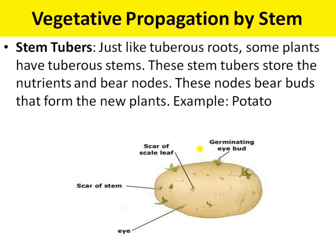A plant like potato is also called a potato tuber because it has an underground stem. Observe a potato carefully and you will see some scars on it. Take a magnifying glass and you might see tiny buds in some scars. These scars are commonly called eyes. Each eye contains an eye bud which is capable of developing into a new plant. When you cut the potato into pieces, each piece containing a few buds or eyes, a new plant grows from each cut piece. The bud grows into a new plant in vegetative propagation by stem.